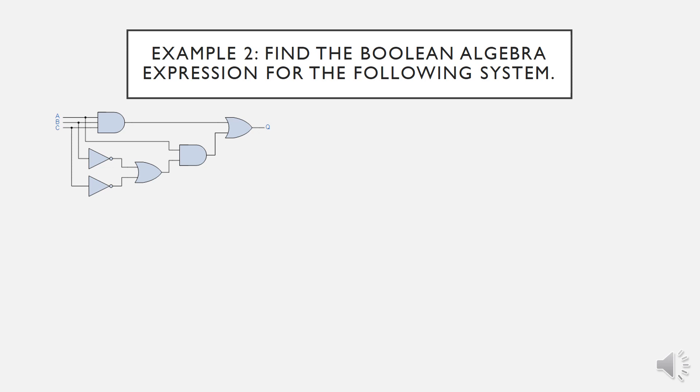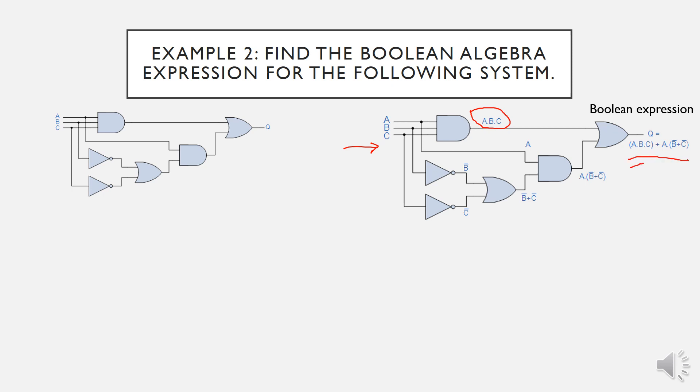The second example of how to find Boolean expression for logic circuits. If we follow the previous steps, we should find out this kind of output for each of the stages. If we start from here, we have three inputs A, B, C, and then at the end we'll find out the final expression for this circuit.